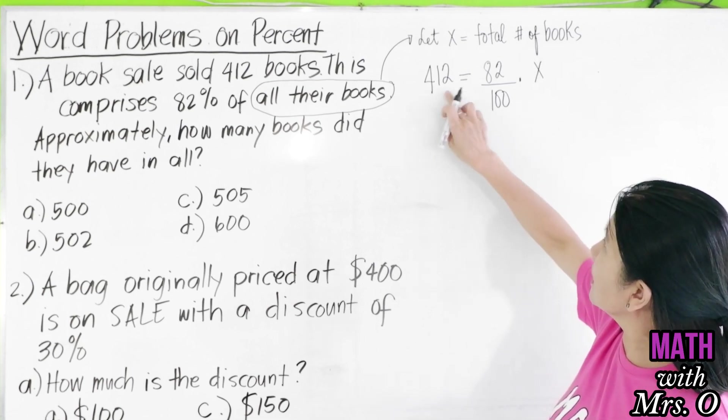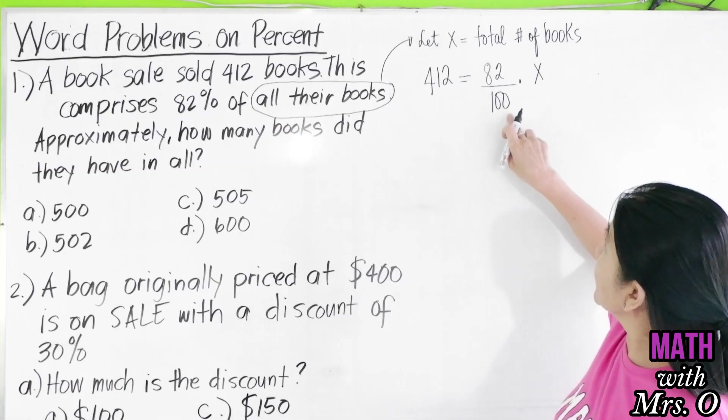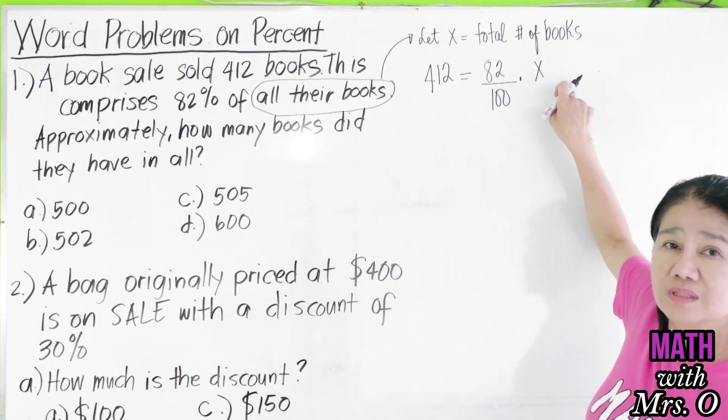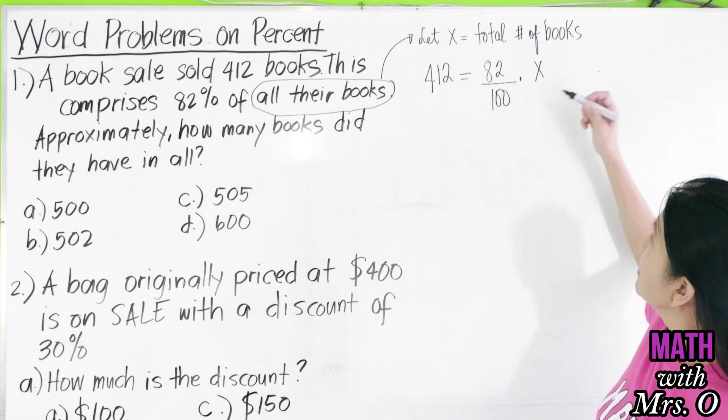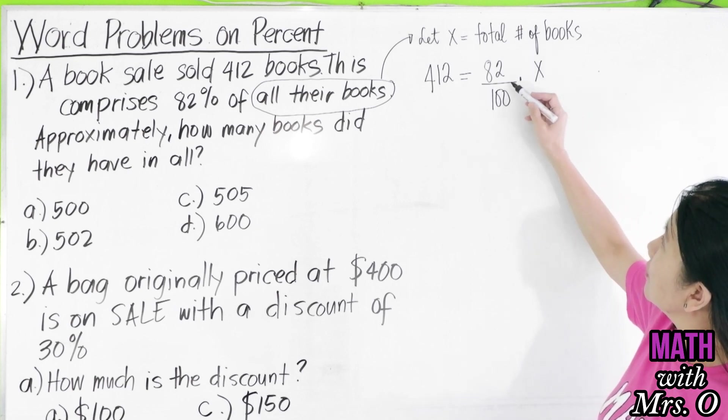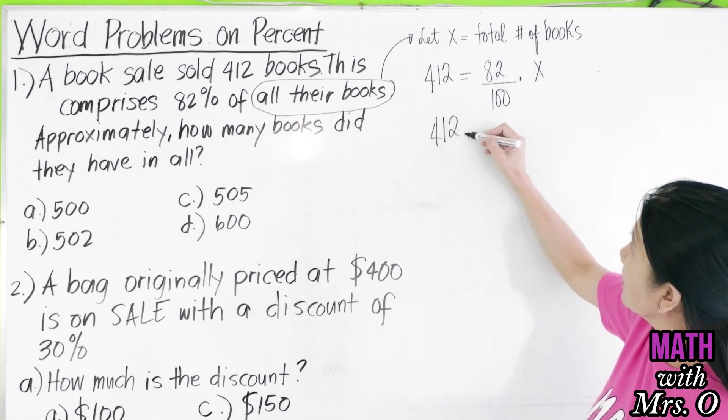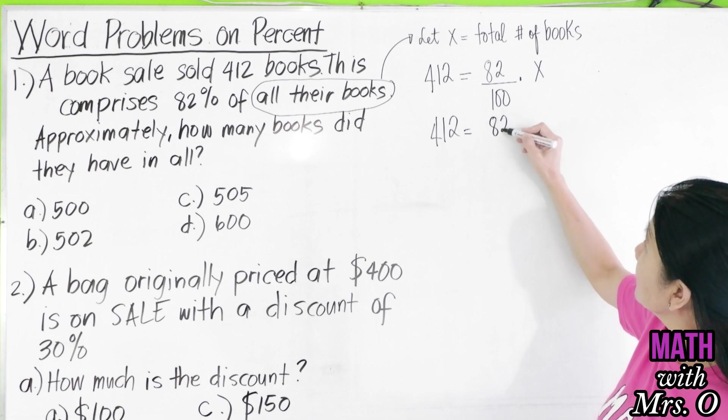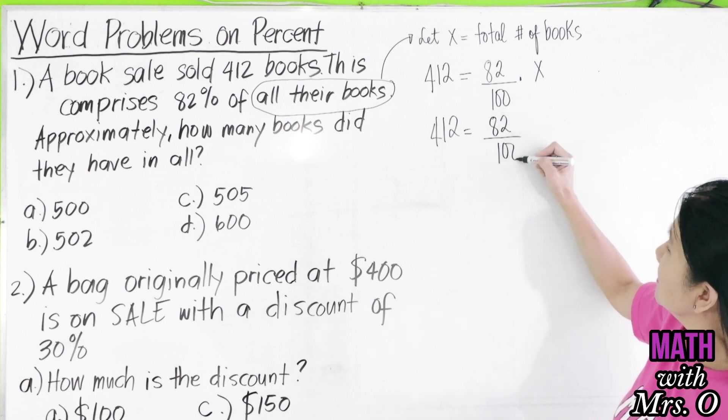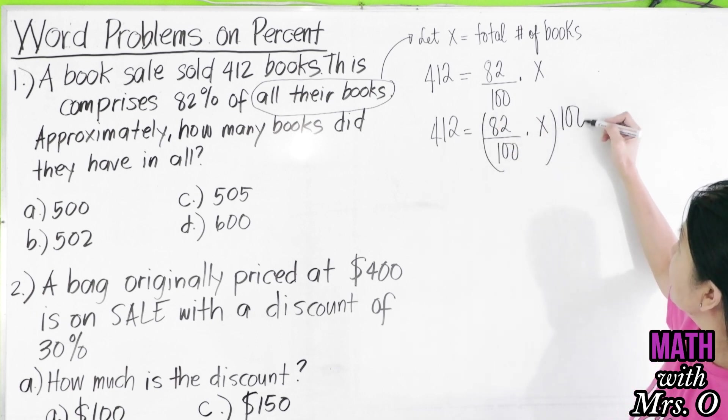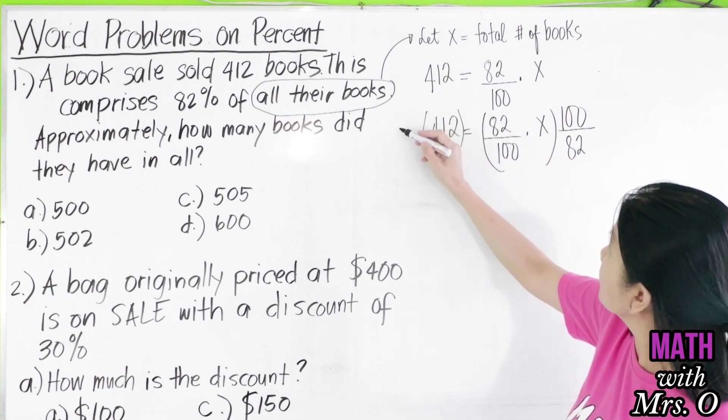So, 412 is 82 per hundred, or 82% of all their books. So, how many books did they have in all? You need to isolate X here. So, we have here 412 equals 82 per 100 times X. To isolate X, we have to multiply both sides by 100 over 82, to the left and to the right.